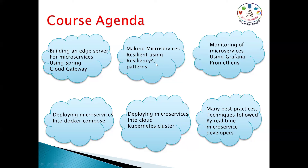When running hundreds of microservices, you need monitoring using Grafana and Prometheus, which we'll implement with Docker Compose in the local environment. We also cover centralized logging. We use the local environment first so you understand the concepts before moving to cloud with Kubernetes, Helm charts, Grafana, and Prometheus.